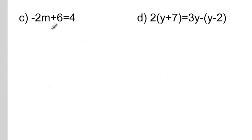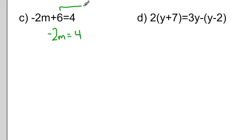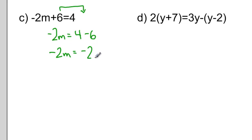We can make things more complicated by adding more steps. So here: negative 2m plus 6 equals 4. I still approach this the same way — I want to isolate the variable on one side of the equal sign, and I do that by first moving any constant terms to the opposite side. When I move that constant term, that positive 6 to the other side, it becomes negative 6.